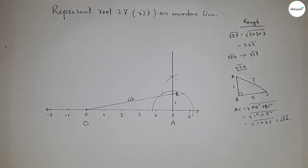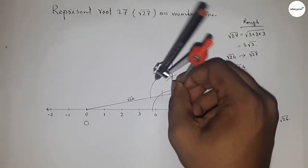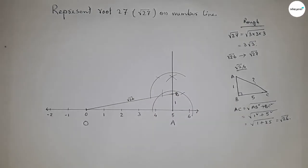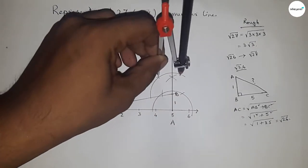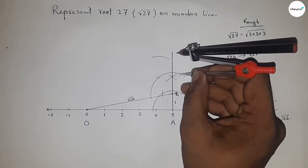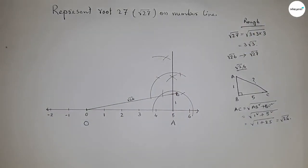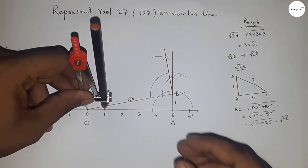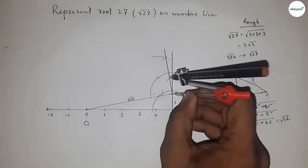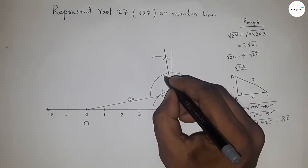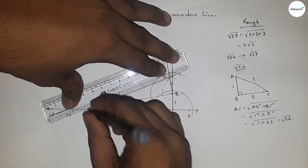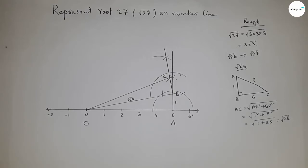Next, construct a perpendicular line at point B. Draw a 90-degree angle at point B using the compass. Then take one unit length, place the compass at B, and mark point C. Joining O and C completes the next step.